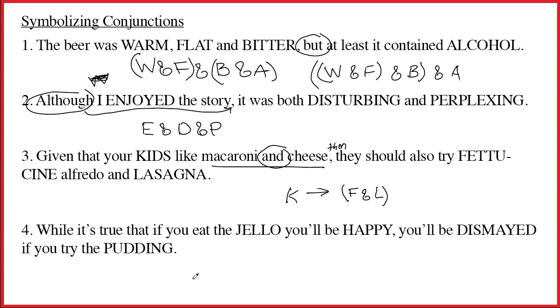Fourth sentence. While it's true that if you eat the jello you'll be happy, you'll be dismayed if you try the pudding. What's the main connective of this sentence? The while at the front, just like the although up above, is working with the comma way back here to place an ampersand. And that ampersand is going to be the main connective because it's working with the comma.